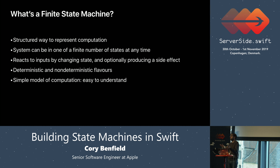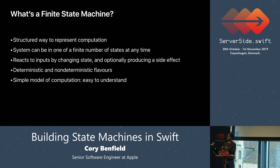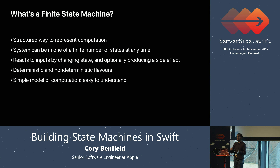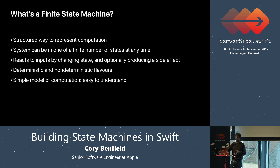It is totally valid for an input to a finite state machine to not cause a state transition — meaning the state after the input is the same as before. It's also valid for an input not to produce a side effect at all. You can also have deterministic finite state machines, where you write down a hard list: this input in this state goes to this output state. Or non-deterministic ones, where a given input and state may lead to one of several possible output states depending on some other random input.